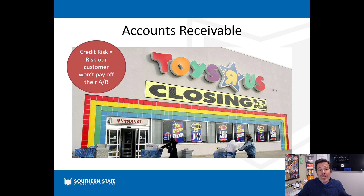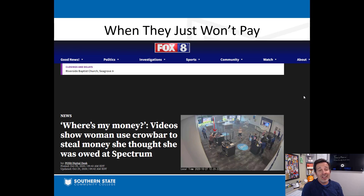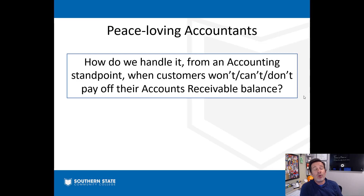The problem is we don't know ahead of time who's going to pay and who's not. If we had that information, we wouldn't sell to someone who wouldn't pay us back. We are peace-loving accountants — we like to settle things from an accounting standpoint. So the question is: how do we handle it when a customer won't or can't pay off their AR balance?